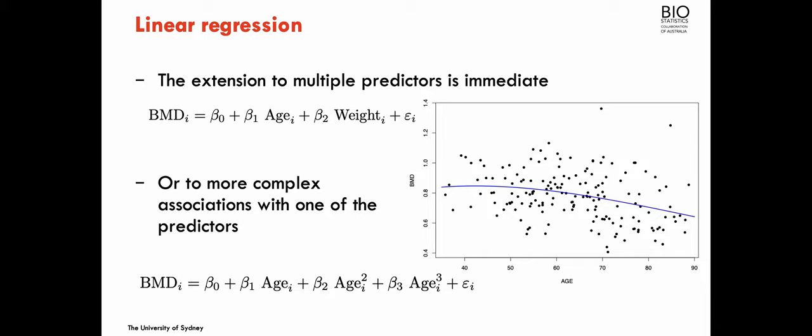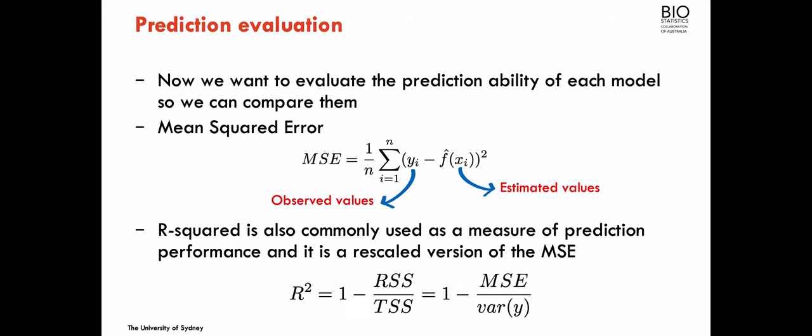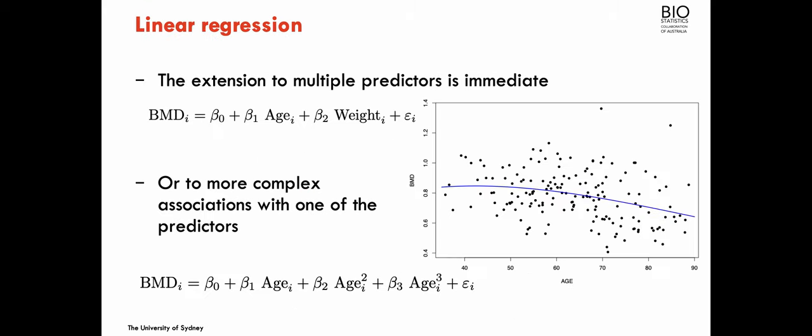We could also think about fitting more complicated models, not only in terms of adding covariates, but also transformations, for example of age. So we could think about fitting a model with age, age squared, age cubed, and we could go on. So how can I compare different types of models that I can propose and then use the data to find estimates for the parameters associated with that model?